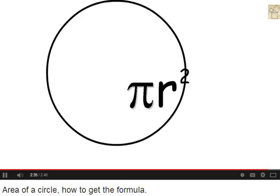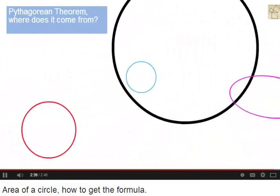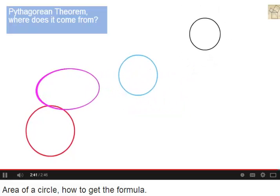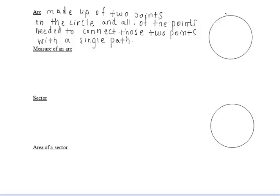So the area of any circle can be found by taking pi times the radius squared. Now the circumference of a circle can be found by taking 2 pi r, which would give us the perimeter of the circle.